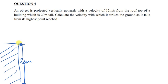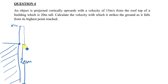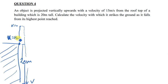You throw an object from the rooftop. It goes vertically upwards and reaches the maximum displacement — the highest point where the velocity is equal to zero. Then it begins to fall down from the highest point. They are asking us to find the velocity at the ground, which is the final velocity.